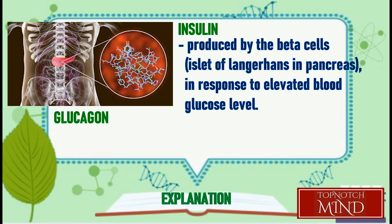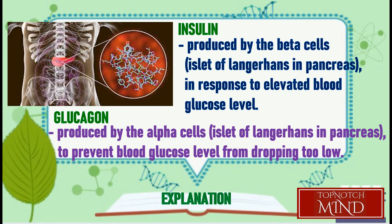Meanwhile, insulin and glucagon have nothing to do with the secretion of calcium in the body. Insulin is produced in response to increased blood glucose level, while glucagon is produced when blood glucose level is low.